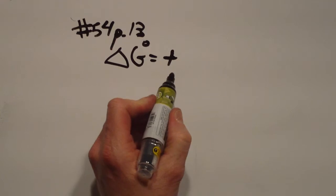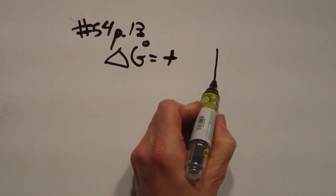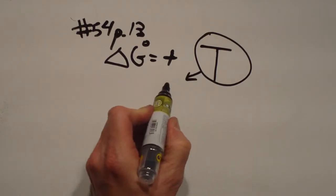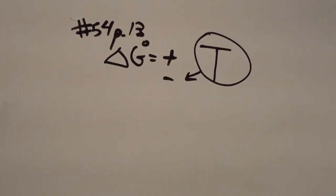However, it says that under high temperatures, degrees Kelvin, G becomes negative. So how could that be that it becomes spontaneous under higher conditions?